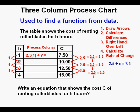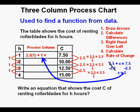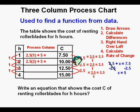We write this as the equation 2.5 plus x equals 7.5. Subtracting 2.5 from both sides, 2.5 minus 2.5 cancel each other, so x equals 7.5 minus 2.5, or x equals 5. This 5 replaces the question mark in the Process Column. Next we try the same rule for the input value of 2: 2 times 2.5 plus 5 equals 10. That checks out. We try the same thing for input values of 3 and 4, and they check out as well.